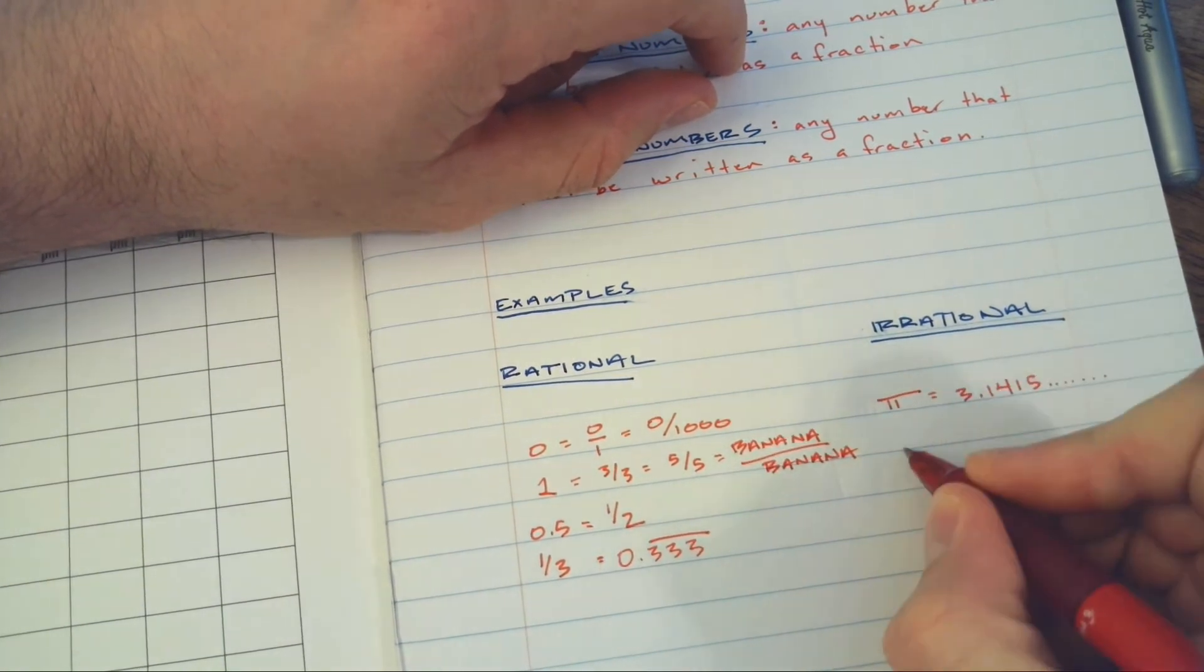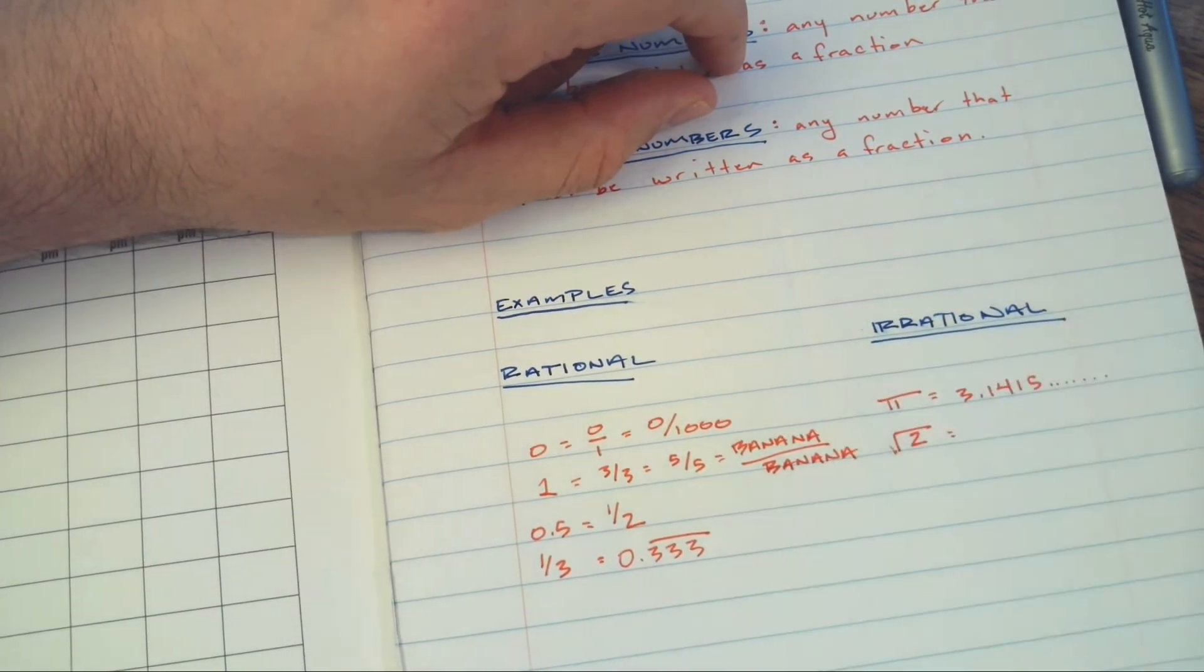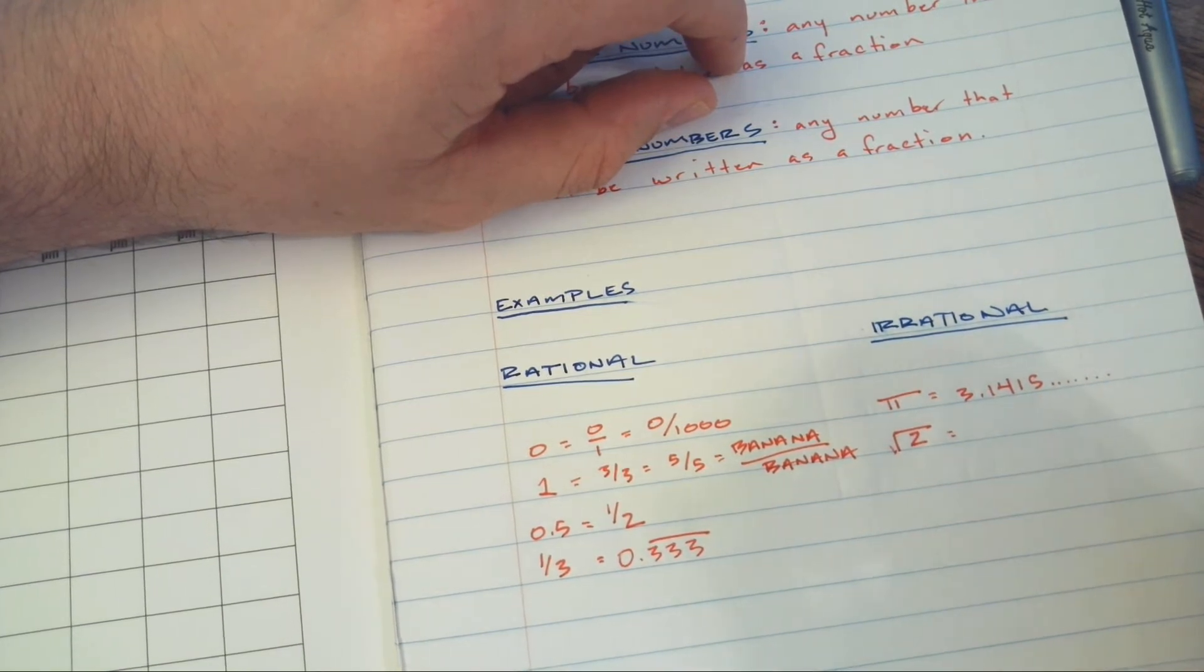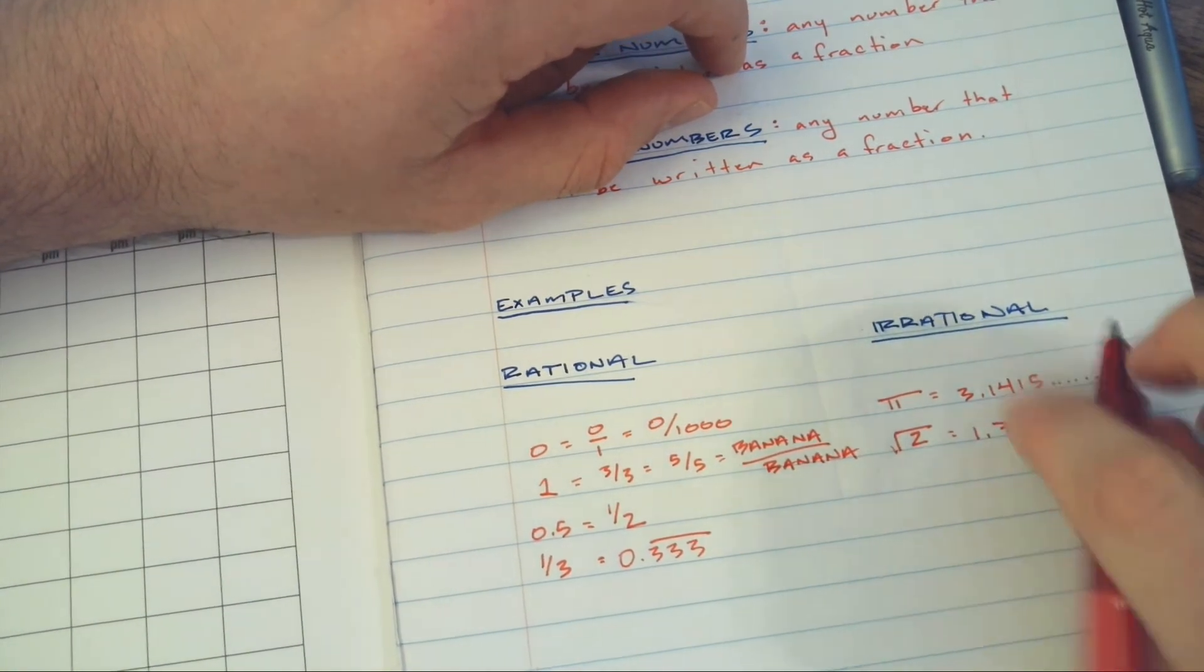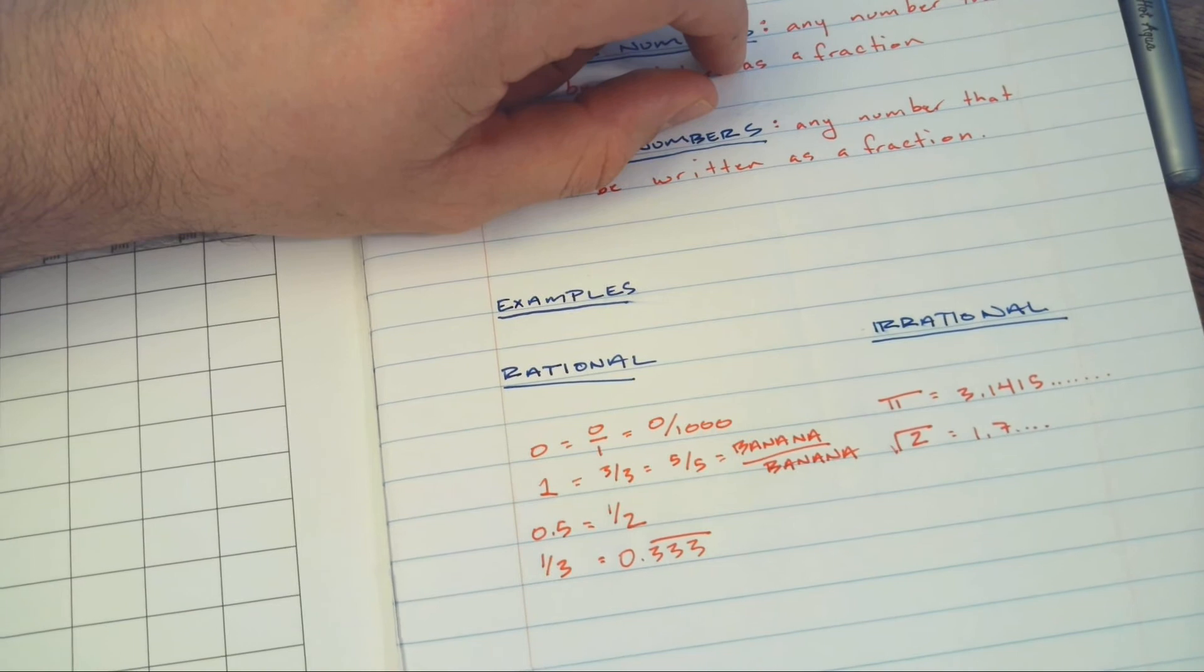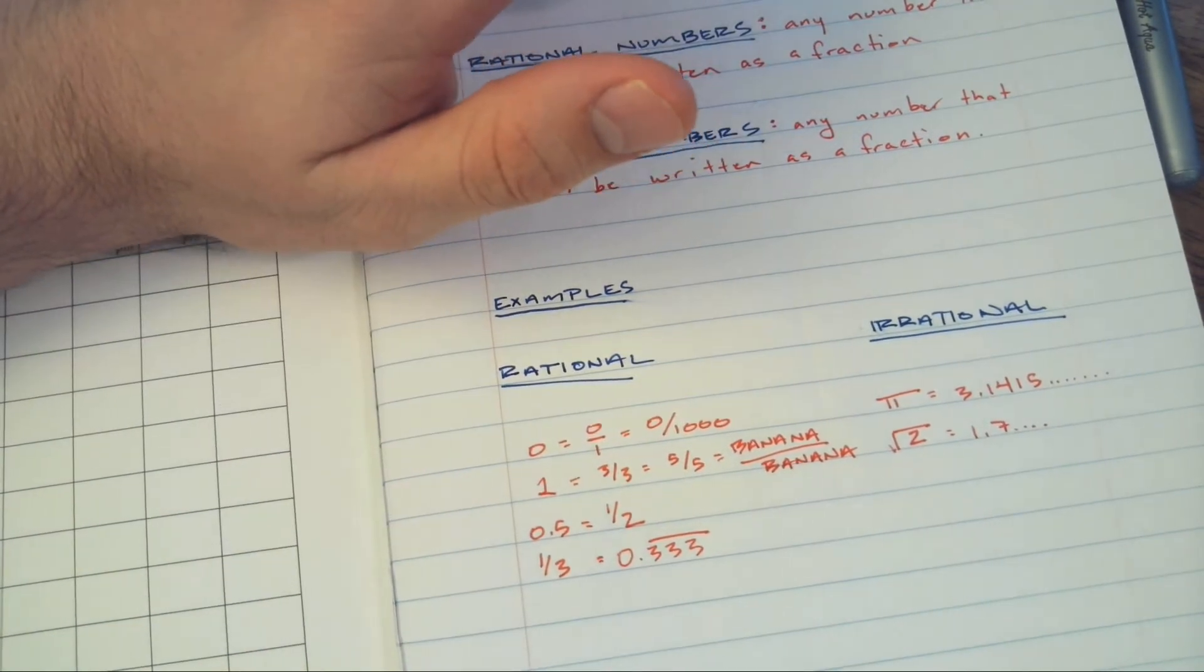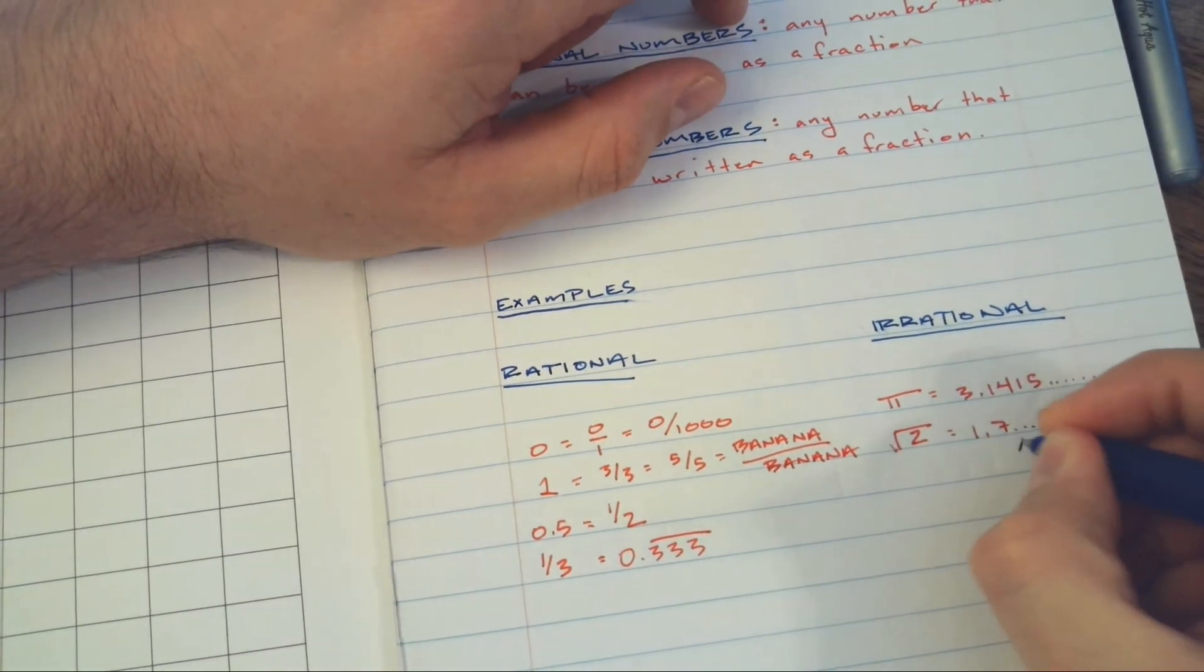We got another type of irrational number - we got radical 2. Radical 2, when you type it into your calculator, what's it going to be? Off the top of my head, it's 1.7, and then I think it's like 1.723, something like that. I don't know, it keeps going though. So radical 2 equals 1.7 and then it keeps going and going. Now that is non-terminating - it does not terminate.